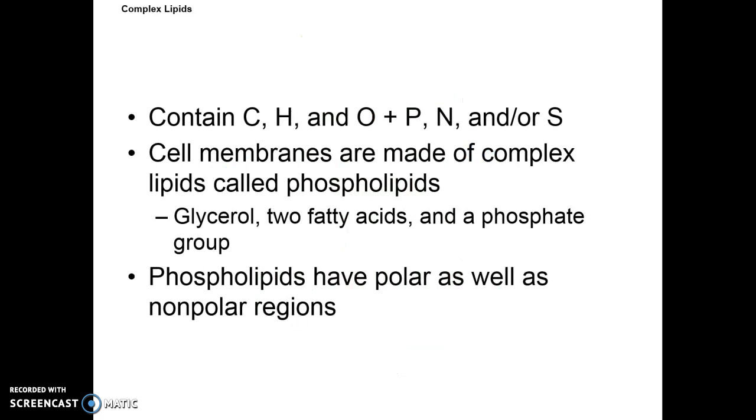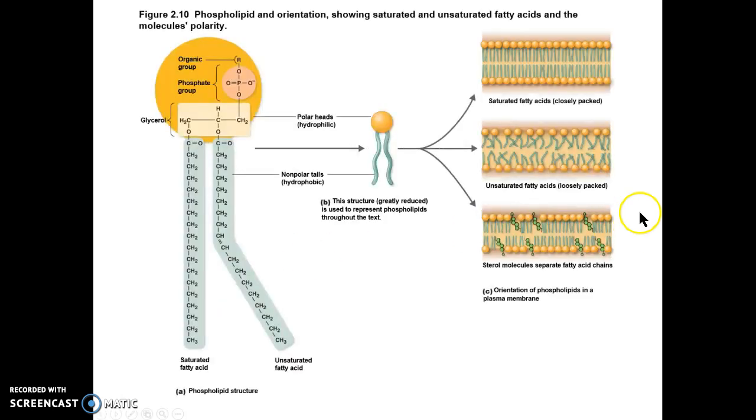Complex lipids contain carbon, hydrogen, oxygen, maybe phosphorus, nitrogen, or sulfur, depending on the system. Cell membranes are made up of complex lipids called phospholipids, which is glycerol with two fatty acids and a phosphate group. Phospholipids have a polar as well as nonpolar region. And so here you can see the saturated fatty acids closely stacked up, creating a nice rigid or semi-rigid structure. Whereas if we look at the unsaturated portion, you can see that it is less structured and it's likely that that plasma membrane would fall apart.